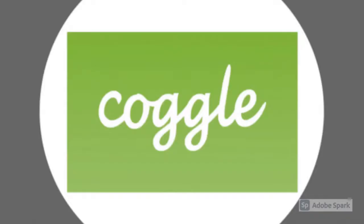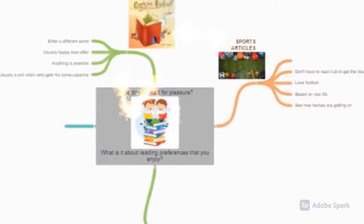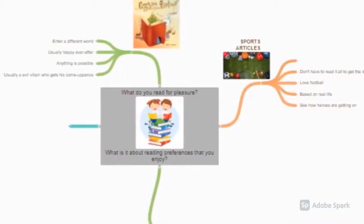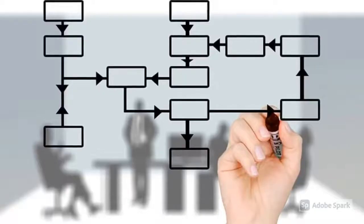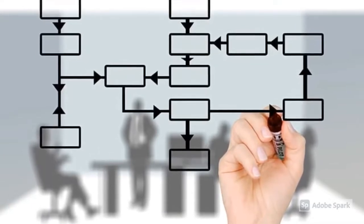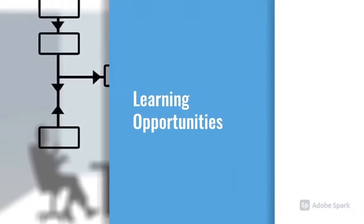Coggle is an example of a brainstorming and mind mapping platform. The user can develop, present and share ideas in attractive online visual formats.